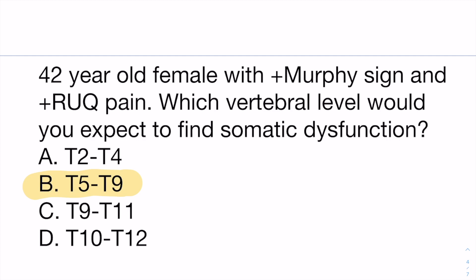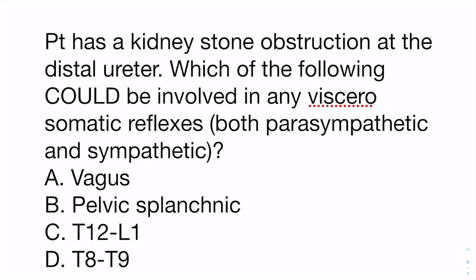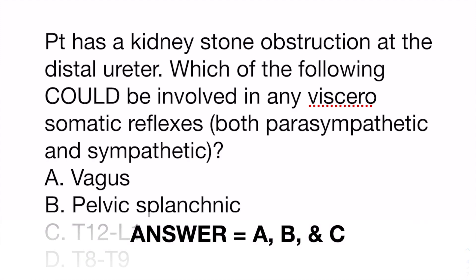A lot of questions are just like this — you identify the organ and then you know the chart. Patient has a kidney stone obstruction at the distal ureter — which of the following could be involved in viscerosomatic reflexes? The vagus nerve innervates the proximal GU system for parasympathetics, and the distal part is innervated by pelvic splanchnic nerves. Since it's the distal ureter, both vagus and pelvic splanchnic could be involved. T12 to L1 could also be involved as those have sympathetic innervation to the GU system. T8 through T9 would be wrong — that's the middle GI system, not the kidneys.